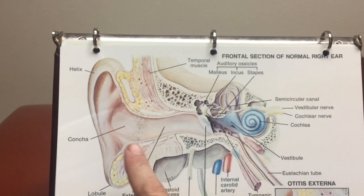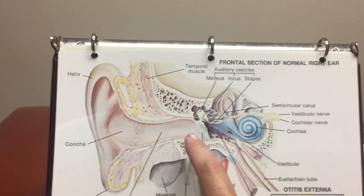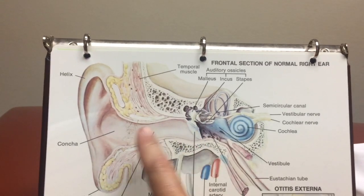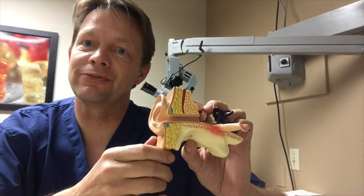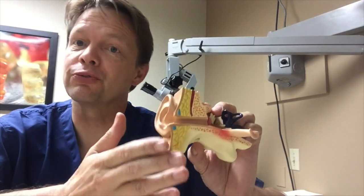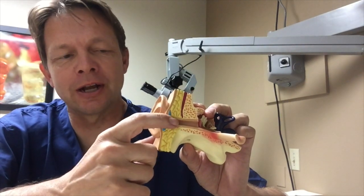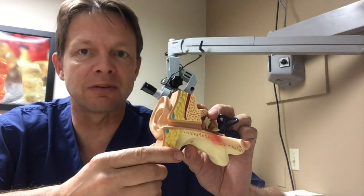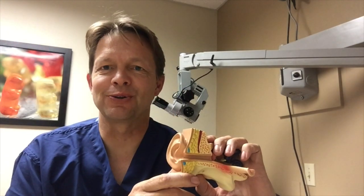External ear infections happen in the ear canal — that portion up to the eardrum. External ear infections are external to the eardrum and can occur for a variety of reasons, but frequently some moisture gets down into the ear canal. That moisture then allows bacteria or perhaps even fungus to grow.